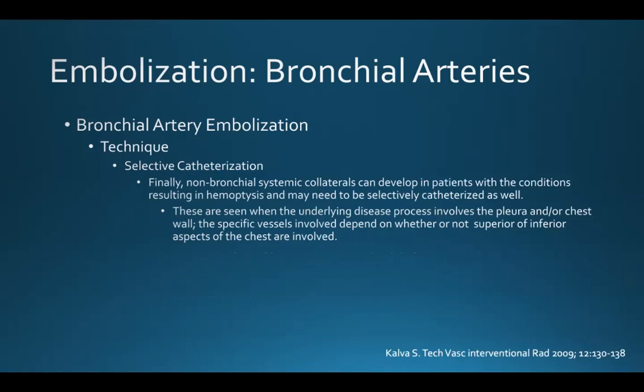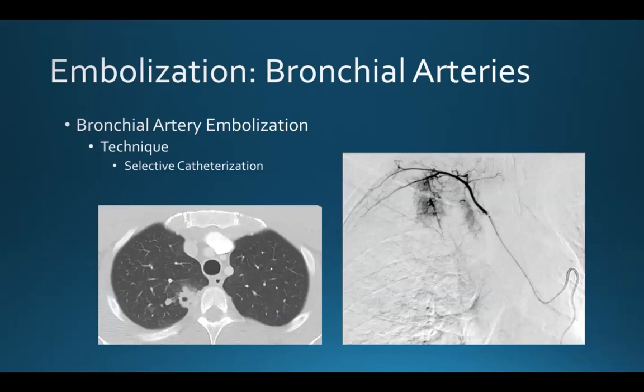Non-bronchial systemic collaterals tend to be seen when the underlying disease process involves the pleura and/or chest wall, and the specific vessels involved depend on whether superior or inferior aspects of the chest are involved. Here's a case involving a cavitary lesion near the right upper lobe, which is subsequently being fed by a non-bronchial systemic collateral arising from the thyrocervical trunk.